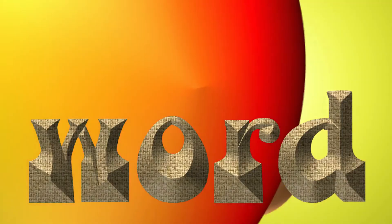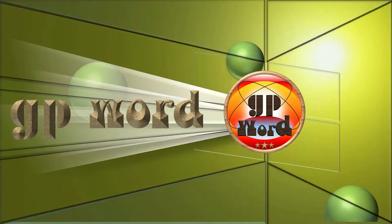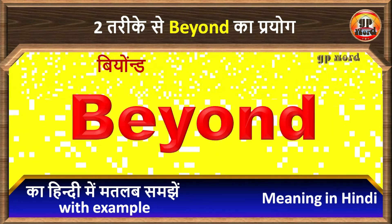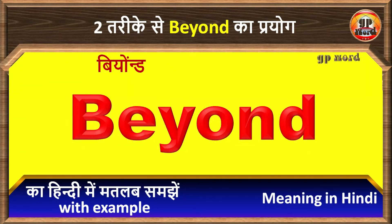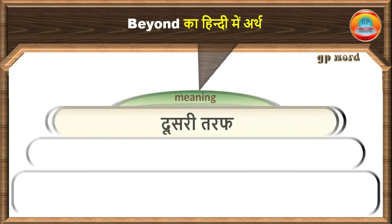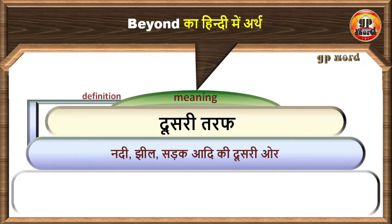GP Word. Beyond — इसका सही अर्थ होता है दूसरी तरफ। इसका मतलब है नदी, झील, सड़क आदी की दूसरी ओर।